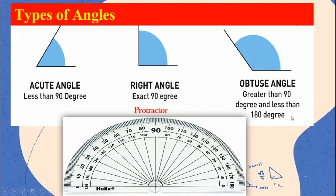Why is it not 180 degrees? Because 180 degrees can be found at the ends of the protractor, and at that point it becomes a straight line. So to recap: obtuse angle is greater than 90 degrees and less than 180 degrees; right angle is exactly 90 degrees; and acute angle is less than 90 degrees. Angles can be facing to your right or facing to your left.